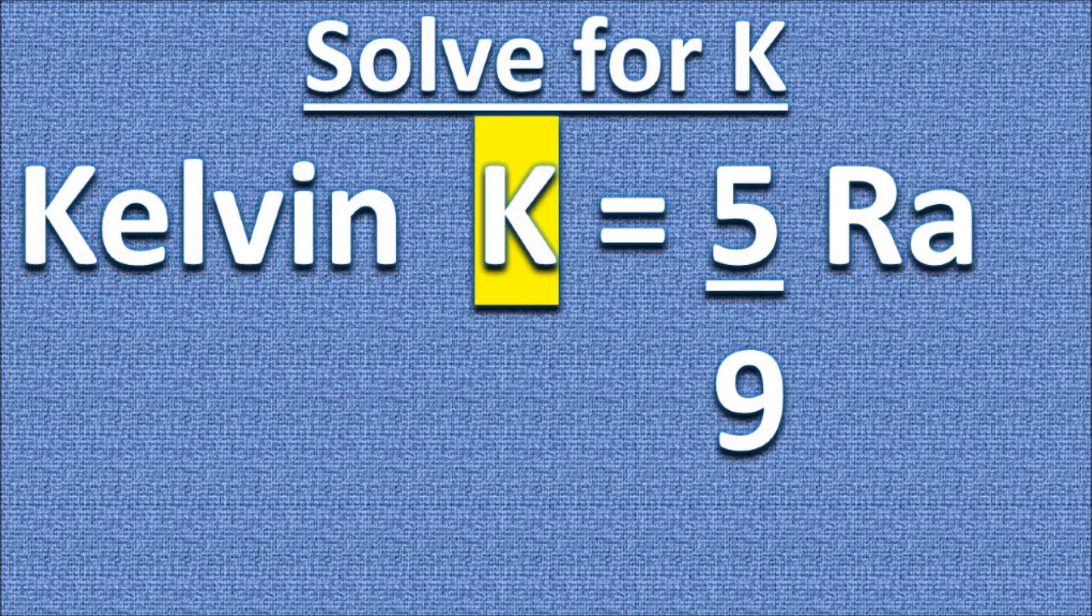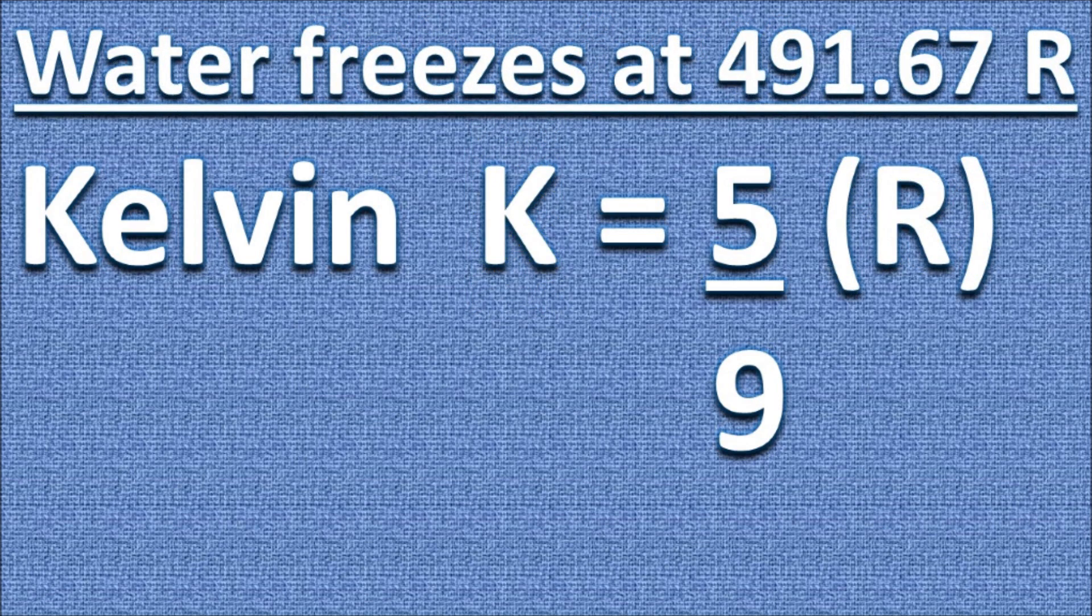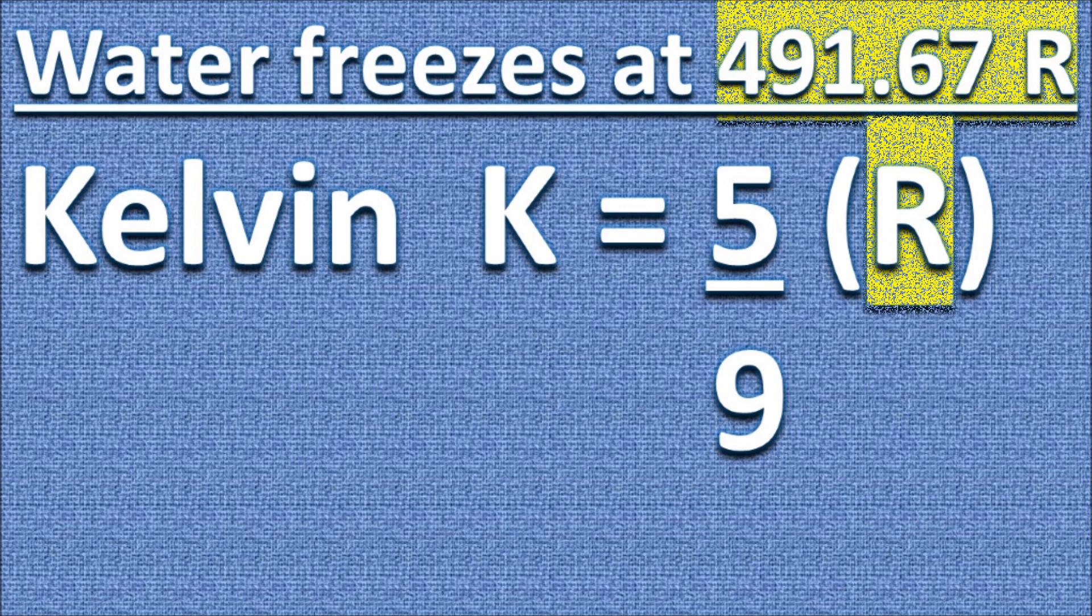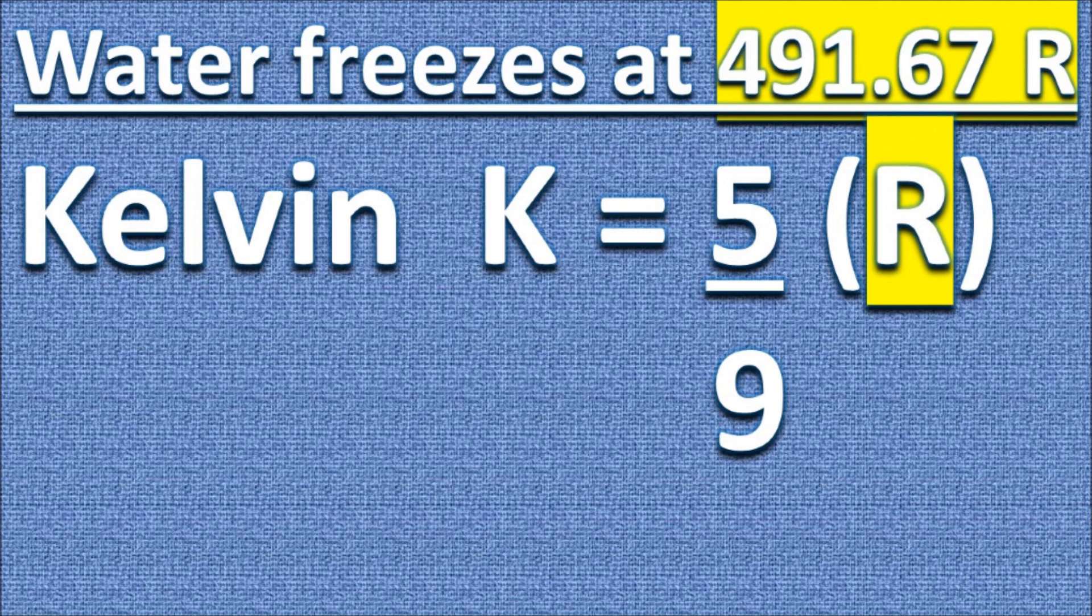Let's plug in a value for Rankine to see how the formula works. On the Rankine scale, water freezes at 491.67. So what is this value in Kelvin? We begin by plugging in this value for R.